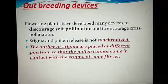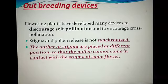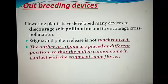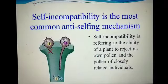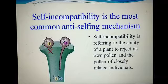So in summary: first, stigma and pollen release are not synchronized — both do not mature together. Second, their positions are such that self-pollination is avoided. The third and very important device is self-incompatibility, which refers to the ability of a plant to reject its own pollen and the pollen of closely related individuals.